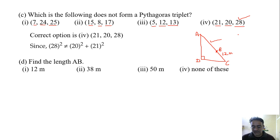38 meters. Right, very good. 50 minus 12, that is 38 meters. So which option is correct? Second option. Second option, right.